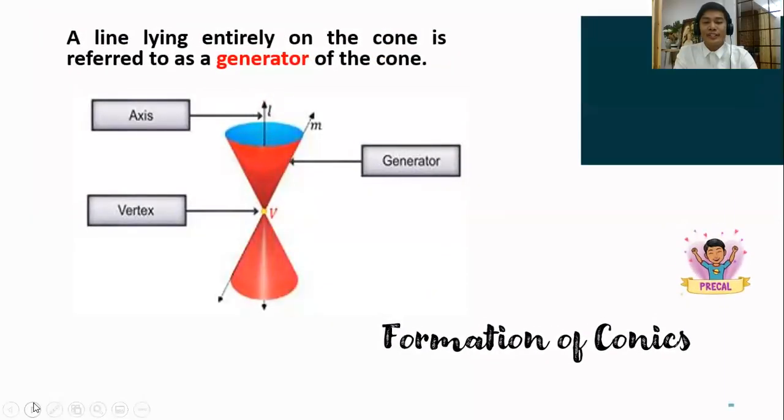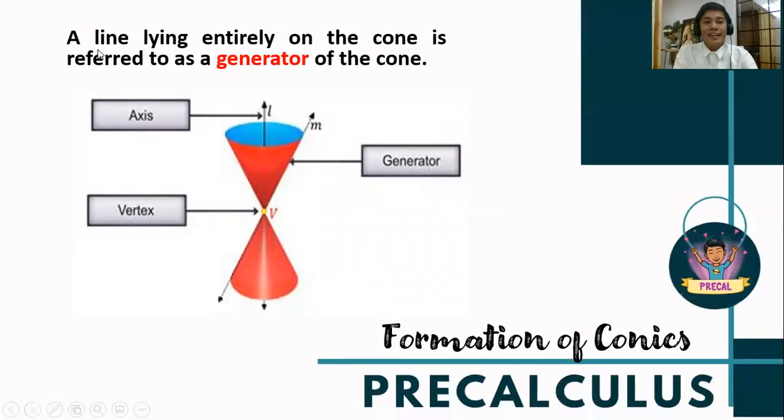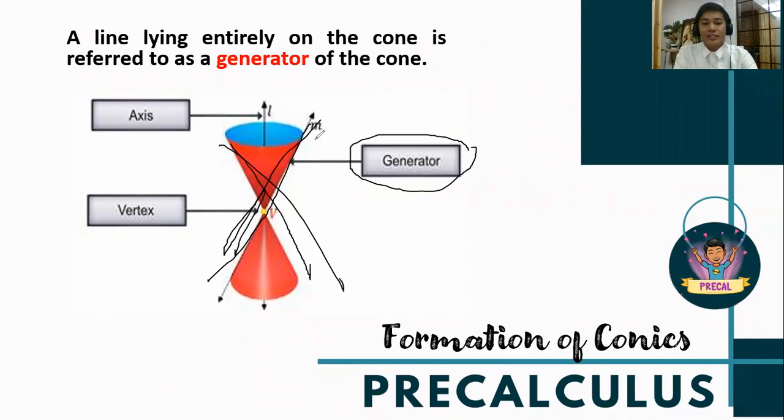Based from his discovery, there is a line lying entirely on the cone that is referred to as the generator of the cone. Look at the illustration here. The illustration indicates the generators of the cone. There are infinitely many generators that comprise these double right circular cones.